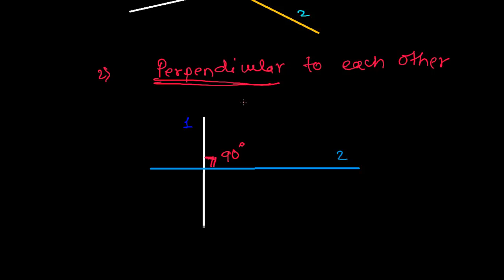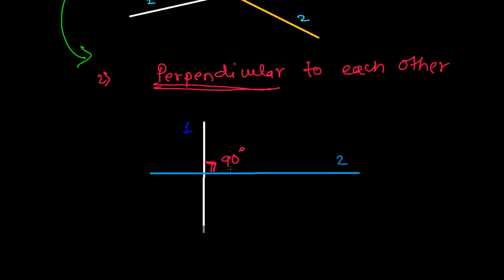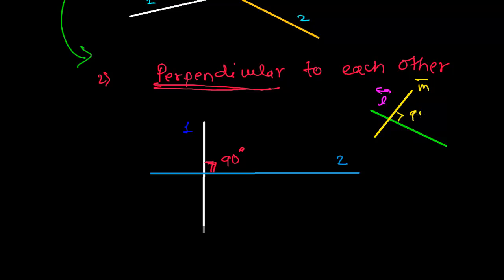Perpendicular lines are a special case of intersecting lines — intersecting but forming 90 degrees. Let me draw one more example. Suppose this is line L and here is another line M. Both are making 90 degrees with each other. So L is perpendicular to M, or M is perpendicular to L. Simply, whenever two lines intersect each other forming 90 degrees, those lines are called perpendicular lines.